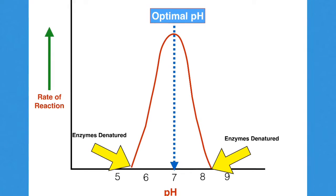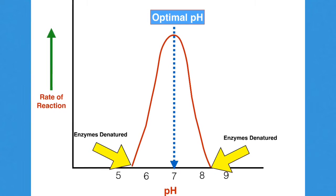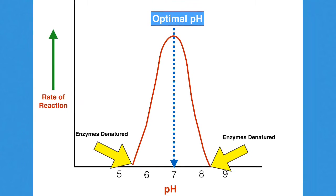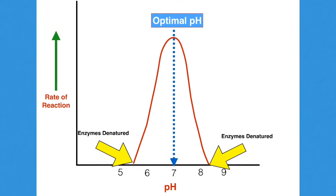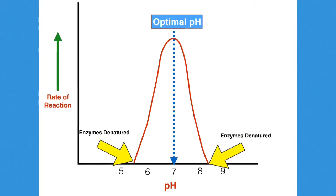Depending on the enzyme, there will be particular pHs at which there is no enzyme activity. The active site is so altered that the enzyme is said to be denatured and so cannot catalyse any reaction.